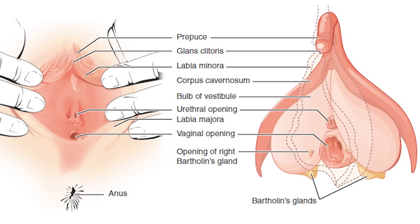Similar to the penis, the clitoris can get enlarged and engorged with blood during arousal — a process called tumescence, very similar to what happens during an erection in a male. All of this erectile tissue covers the urethral opening and the vaginal opening and extends out to the sides, lying right underneath some of the inner lips of the vagina, or labia minora, which is why some people find those areas to be very sensitive.